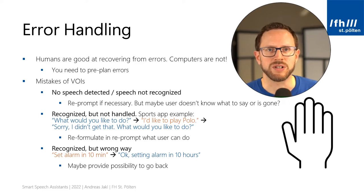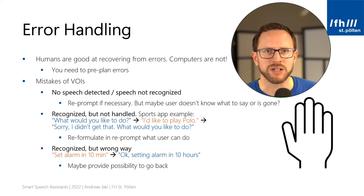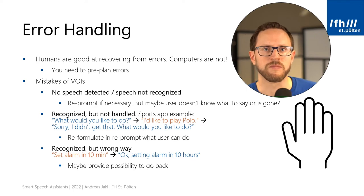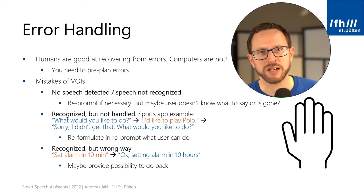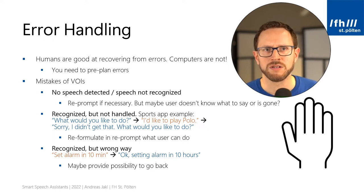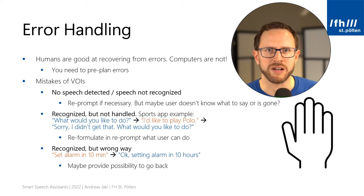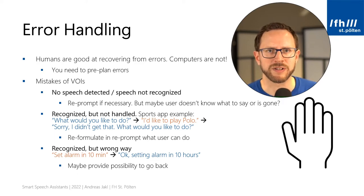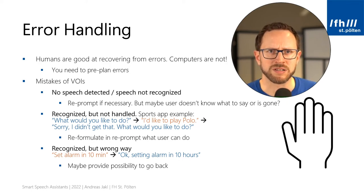Another potential issue is that the voice assistant recognizes what the user said, but the user's choice is not something your service can handle. For example, in a sports skill, you can formulate a rather open question like 'What would you like to do?' The user then responds with 'I'd like to play polo.' However, this is not something your service supports. A re-prompt of 'Sorry, I didn't get that. What would you like to do?' is not really helpful — users will most likely simply repeat their query. It's better to be more focused, for example by specifying the available options: 'Sorry, I can't do this right now. Would you like to play soccer or golf?'